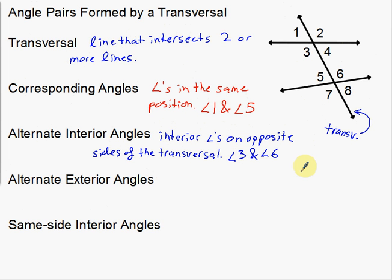The other pair is angle four and angle five. Since we have four interior angles to look at, there are only two pairs. Moving on — this next one is going to be almost the exact same as the last one, except now we're talking about alternate exterior angles.